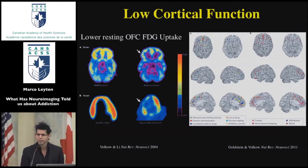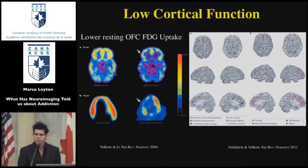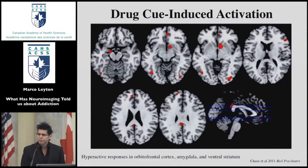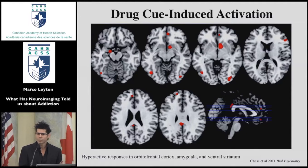The one condition in which low cortical function is not seen is when individuals are exposed to drug-related cues. The presence versus absence of drug-related cues can have really quite profound effects on brain transmission and behavioral responses. This effect of cues activating various parts of the brain has been quite pronounced and has been seen in a large number of studies; two recent meta-analyses came to the same conclusions.